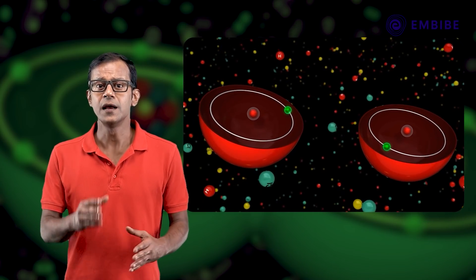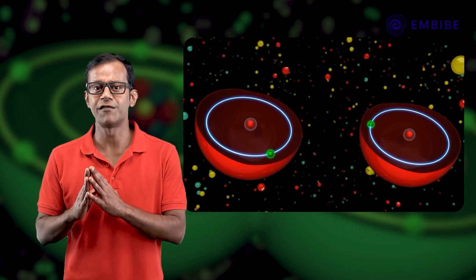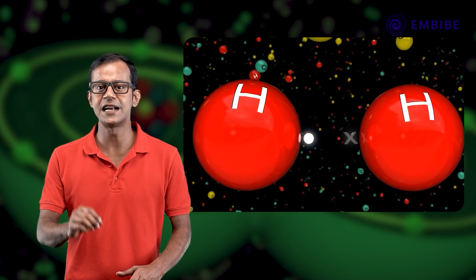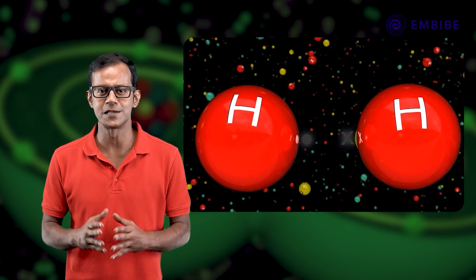According to the Lewis notation, electrons in the valence shell of atoms would be represented by dots or crosses.